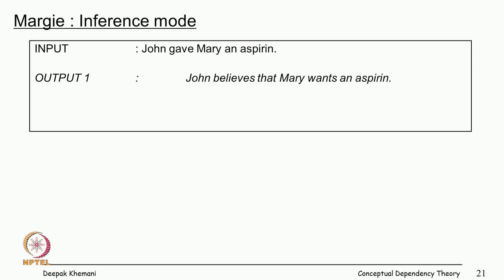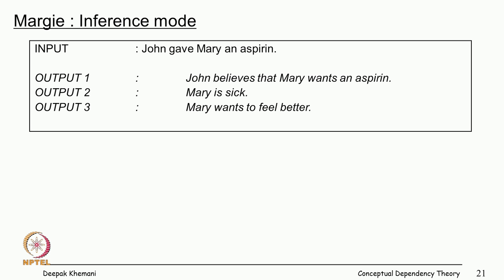Here is the sentence: 'John gave Mary an aspirin.' All these inferences Margie makes — that John believes Mary wants an aspirin, that Mary is sick, Mary wants to feel better, and Mary will ingest the aspirin. You can see these are not deductive inferences; they are not guaranteed to be true. But we do not often make inferences that are guaranteed to be true. This is a focus on non-logical inference-making, based more on what really often happens in the world.